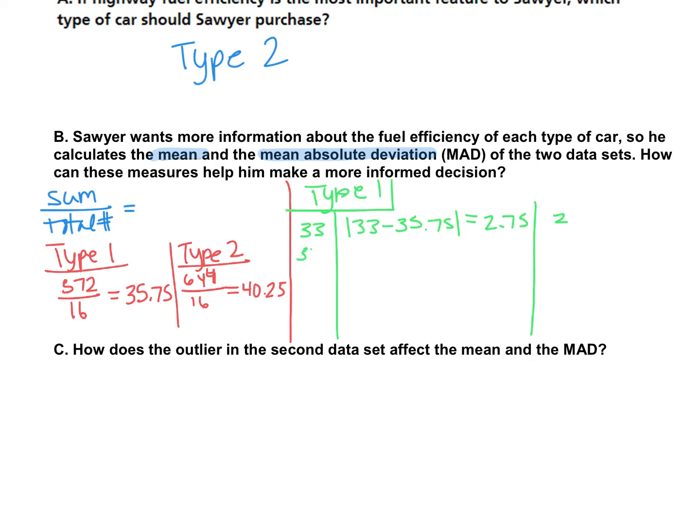We also had a miles per gallon of 34, so we take our absolute value of 34 minus 35.75. That's going to give us 1.75. And how many cars had a miles per gallon of 34? We had three of those. We had 35, so we're going to take 35 minus the mean, 35.75. This one is 0.75 away from the mean. And how many 35s did we have in our data set? We had three of those.